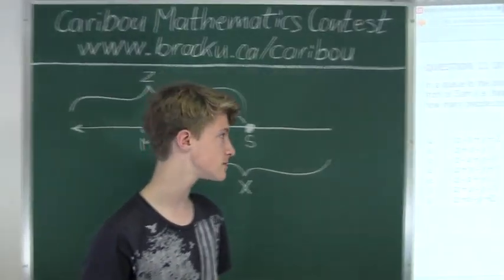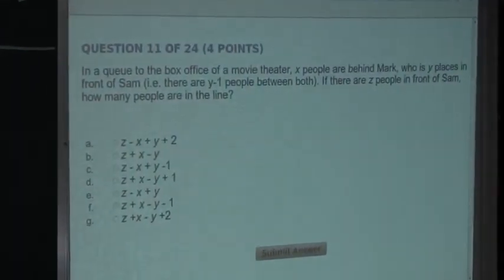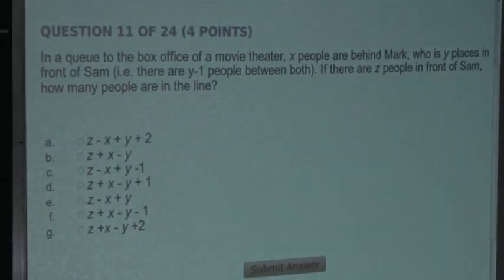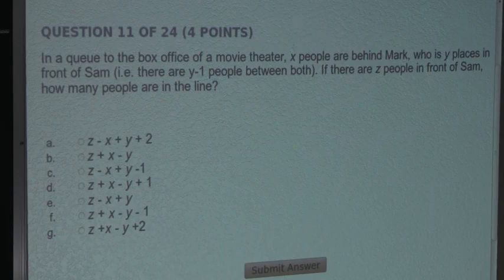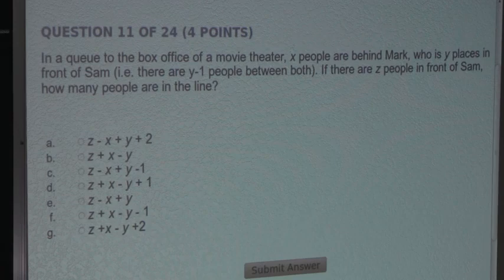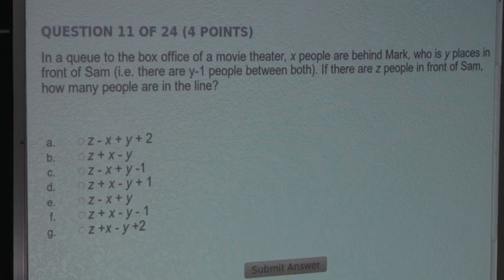So the question is: In a queue to the box office of a movie theater, X people are behind Mark, who has Y places in front of Sam, i.e., there are Y-1 people between both. If there are Z people in front of Sam, how many people are in the line?